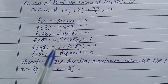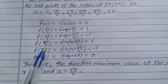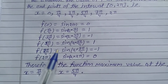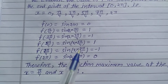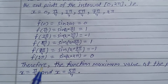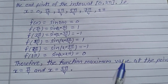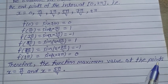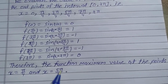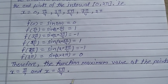The values f(π/4) and f(5π/4) are both equal to 1, which is the maximum. Therefore, the function attains its maximum value at the points x = π/4 and x = 5π/4. That is the solution.